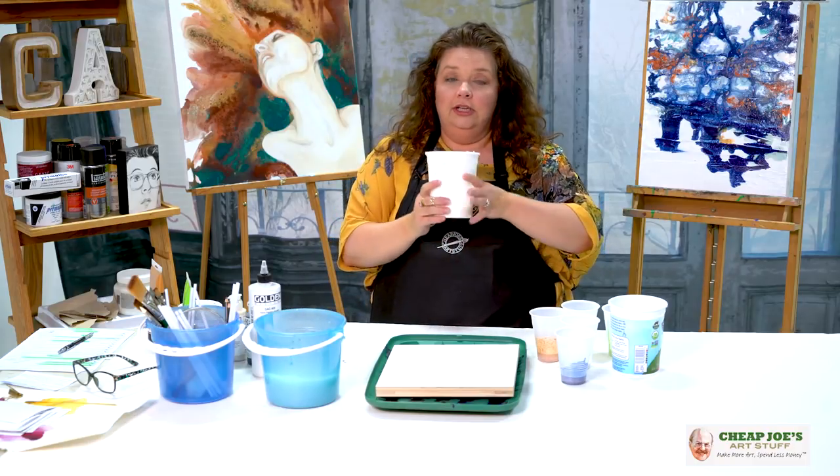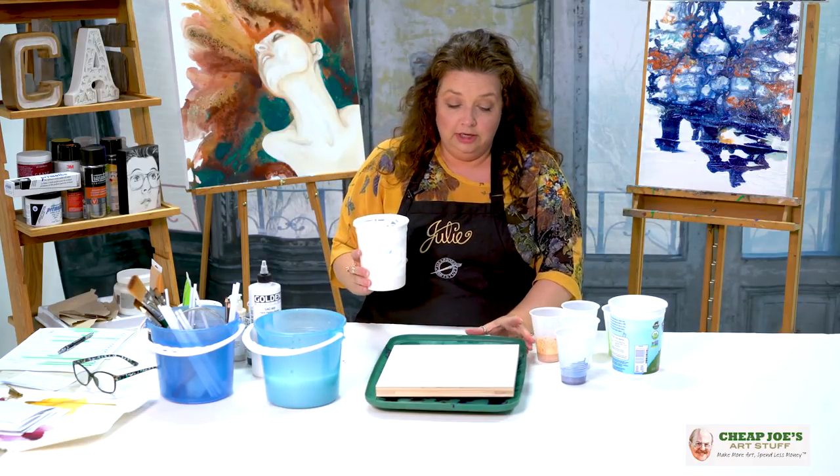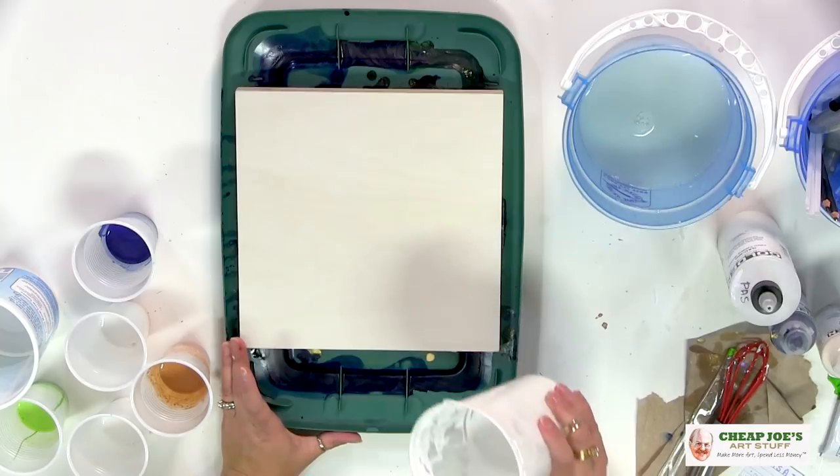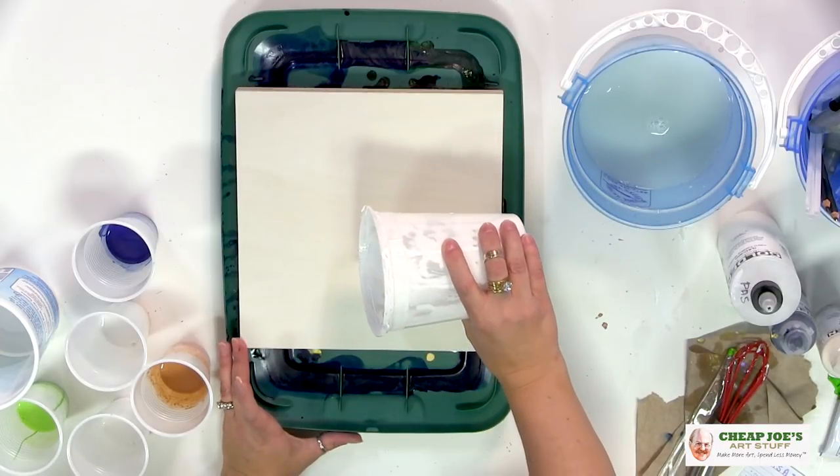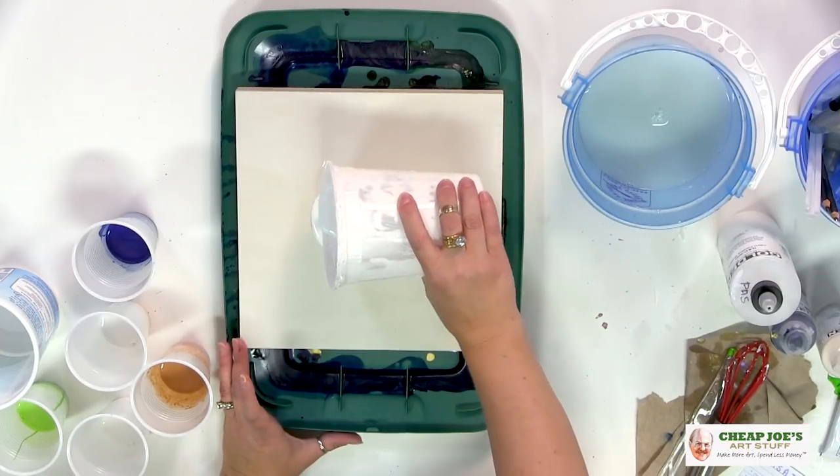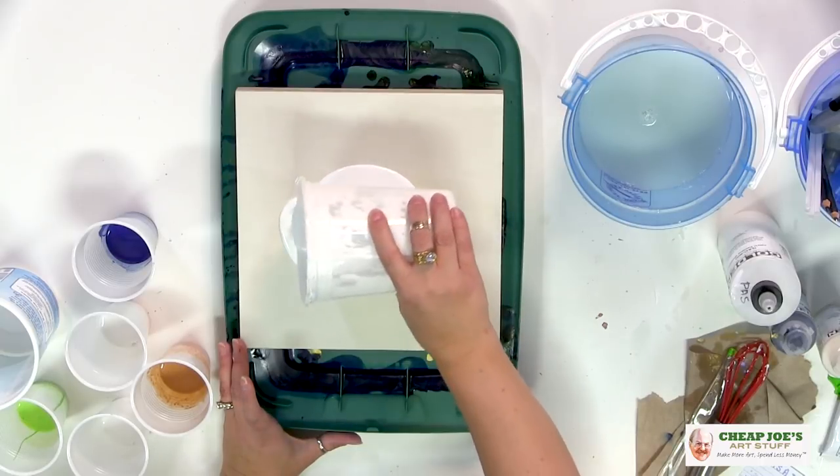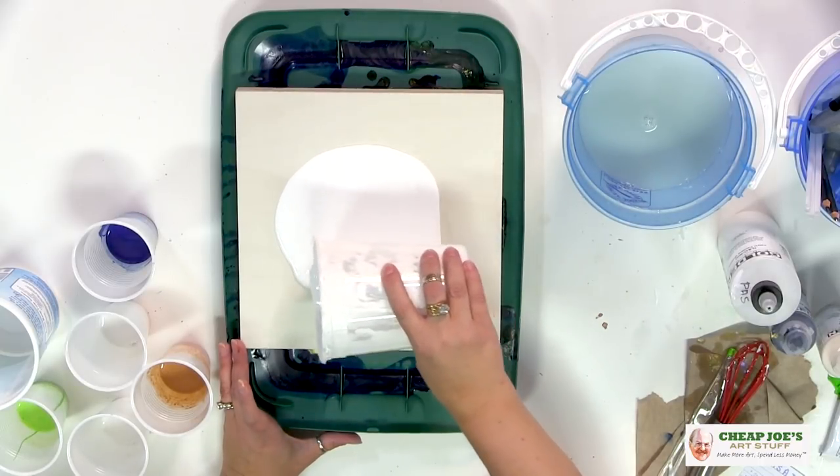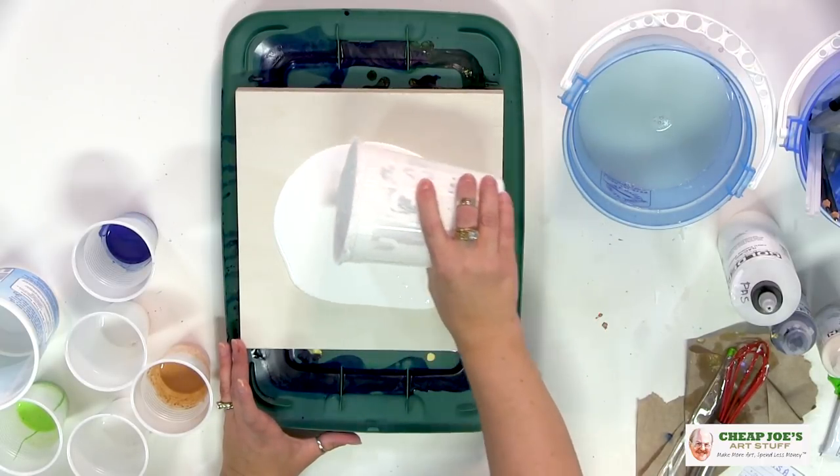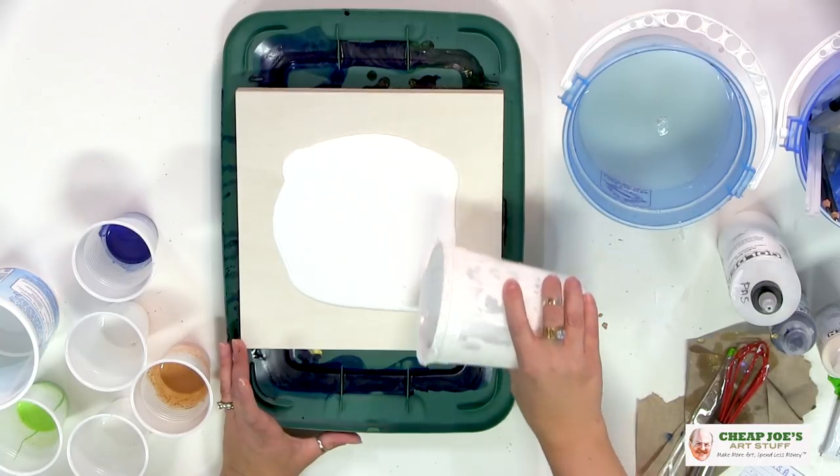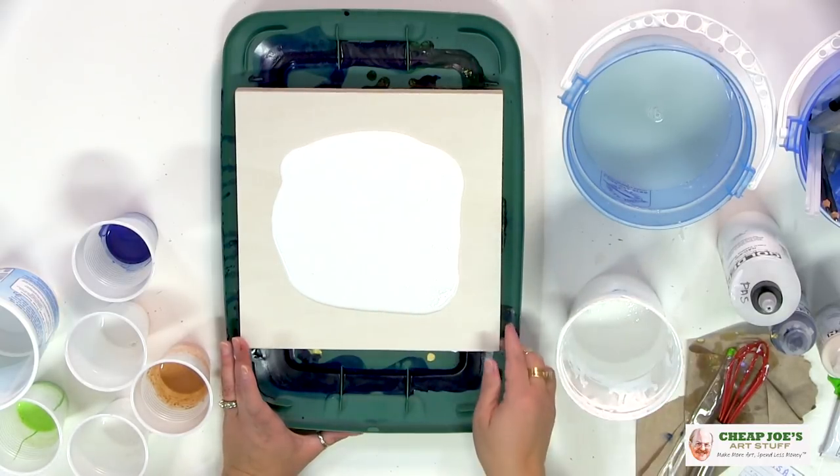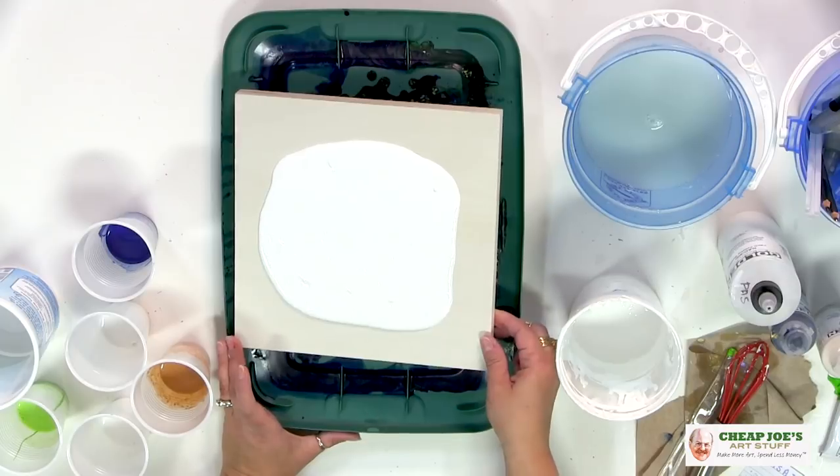But let me show you we're going to do this titanium flood right now. And I've got my little handy Rubbermaid lid here as my catch. Got a Cheap Joe's wood panel here that I like to use. It is unprimed because we kind of don't need it.